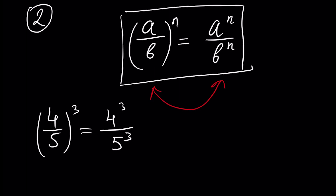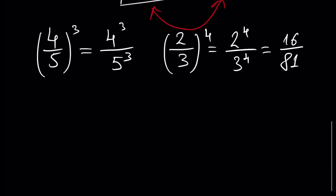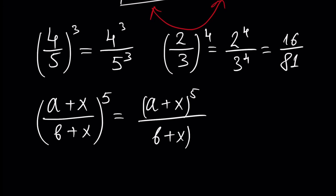Another instance: (2/3) to the power of 4 equals 2 to the power of 4 divided by 3 to the power of 4, which is 16 over 81. Another example: assume we have (a plus x) divided by (b plus x), all raised to the power of 5. Using the formula, this equals (a plus x) to the power of 5 divided by (b plus x) to the power of 5.